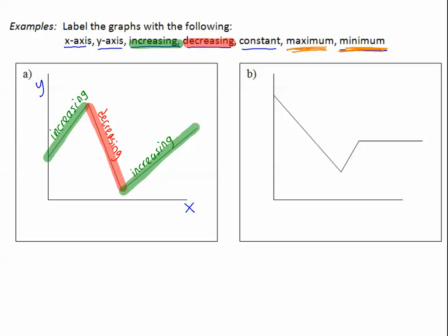So where do we have a maximum and a minimum? Changing from increasing to decreasing. Remember, a maximum is a little hill. So here is a maximum point. Let's write max. Minimum is like a valley, decreasing to increasing. That happens right here. So we can write min for the minimum.